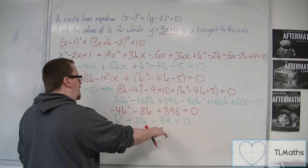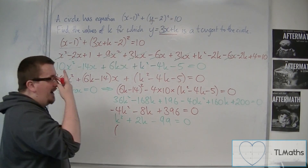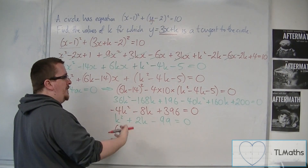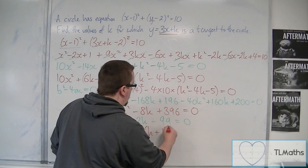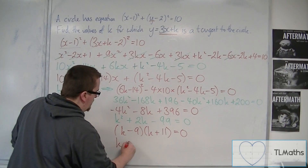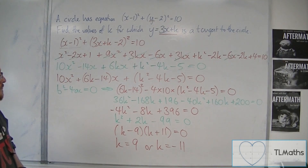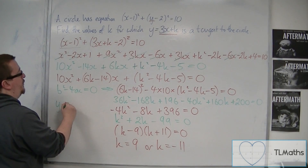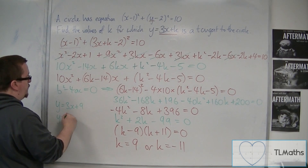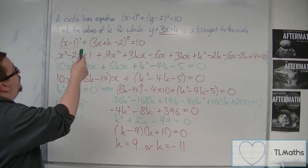We can factorise k squared plus 2k minus 99. Two numbers that multiply to minus 99 and add to 2 are minus 9 and 11. So we get (k minus 9)(k plus 11) equals 0, meaning k equals 9 or k equals minus 11. So y equals 3x plus 9 and y equals 3x minus 11 are both tangents to the circle.